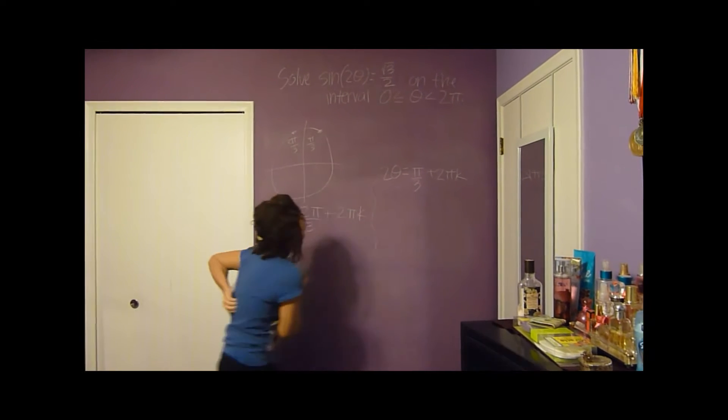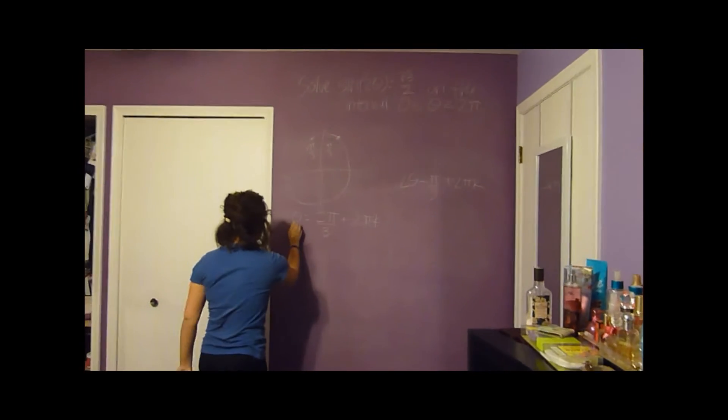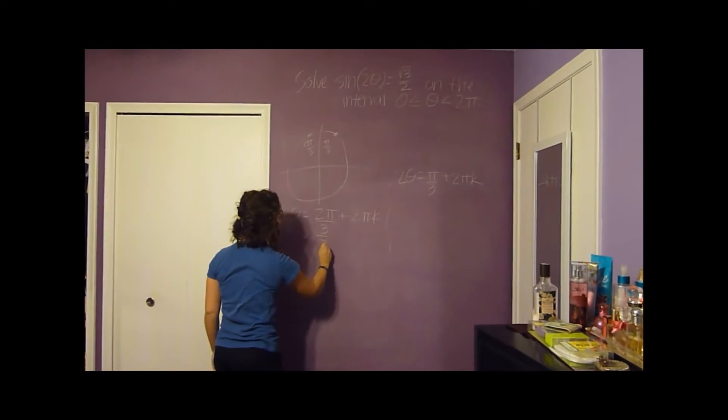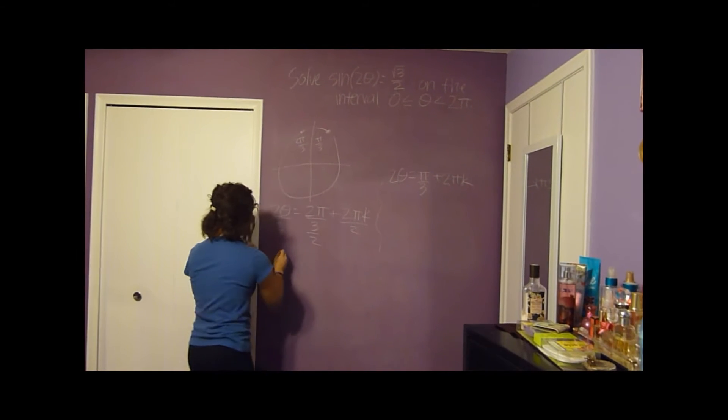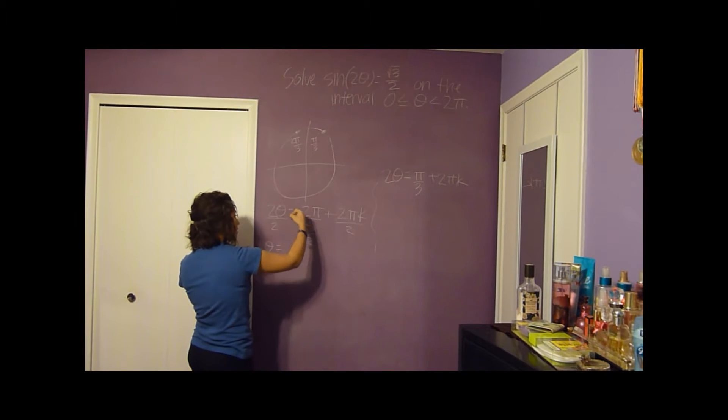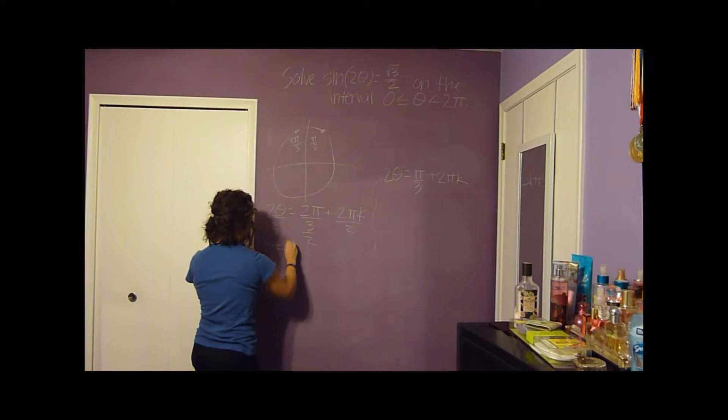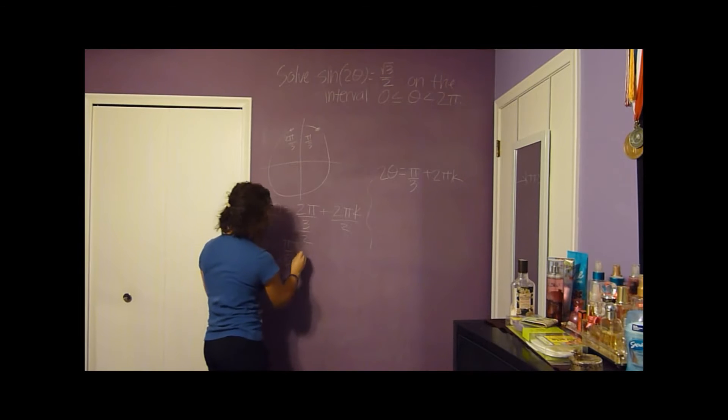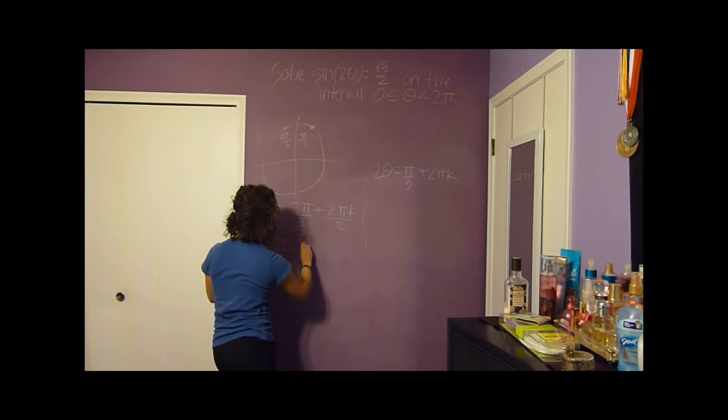So I guess we'll start with this one. We divide by 2, so theta will equal 2 pi over 6. 2 pi over 6 would be pi over 3 plus pi k.